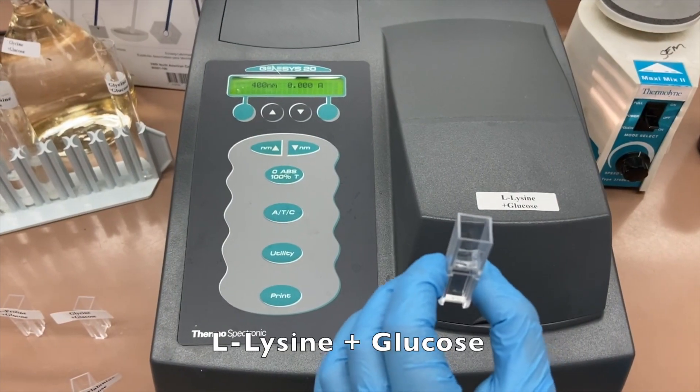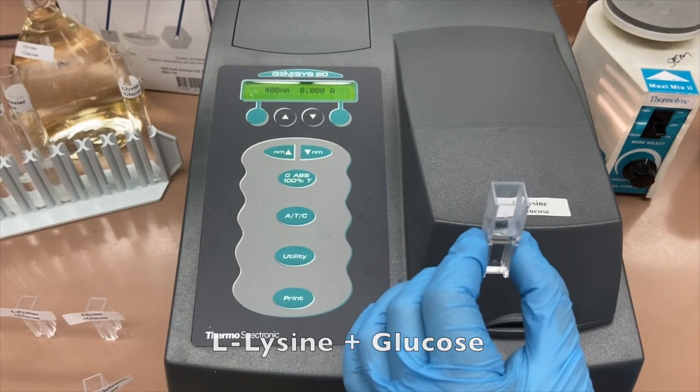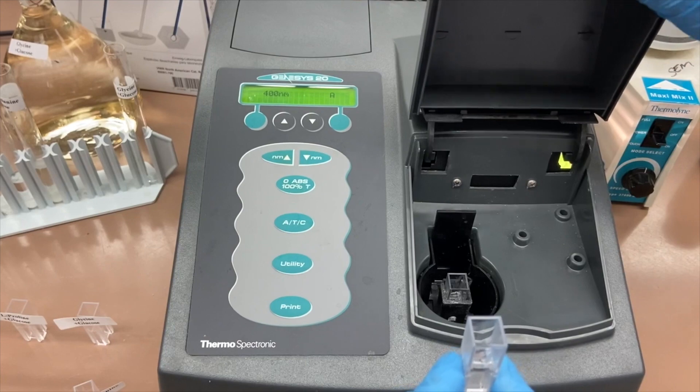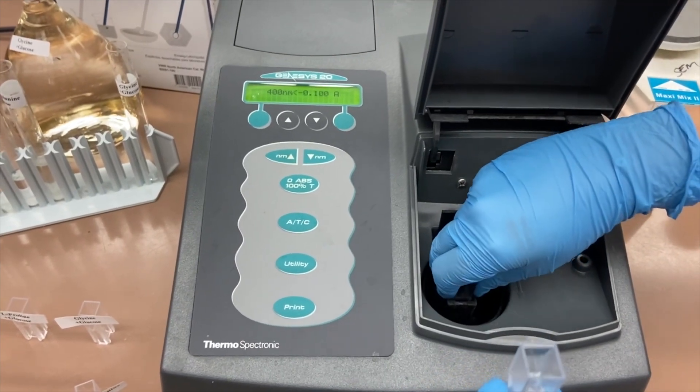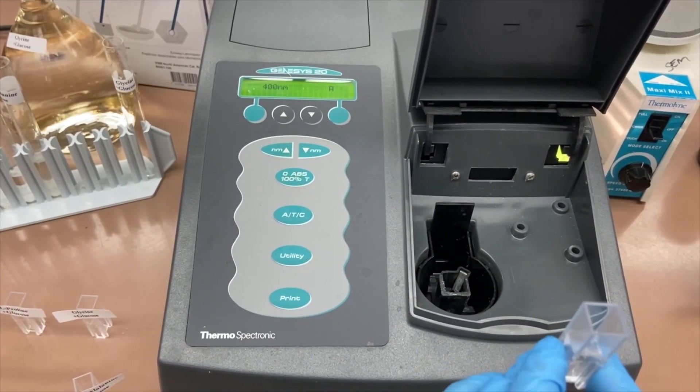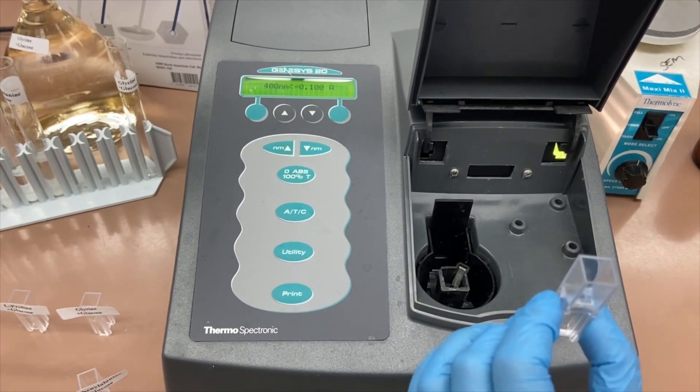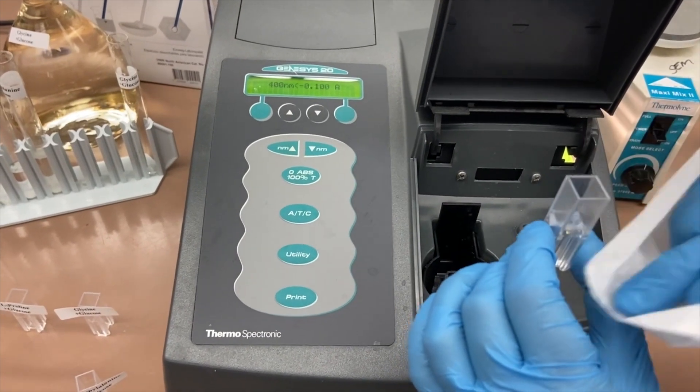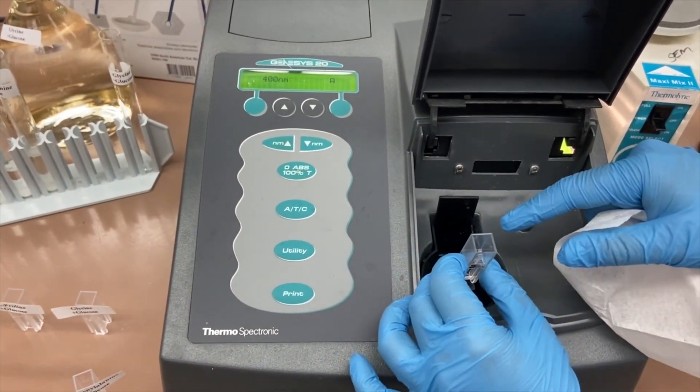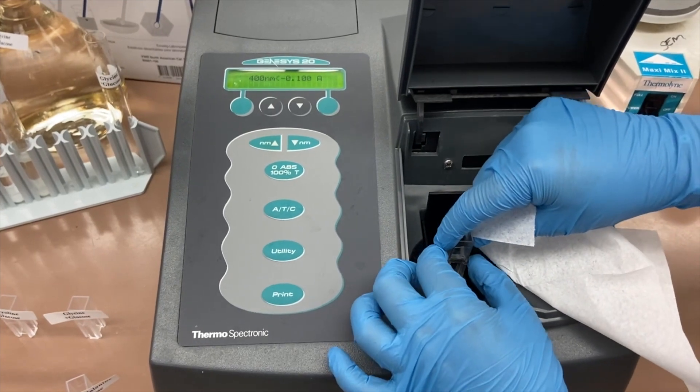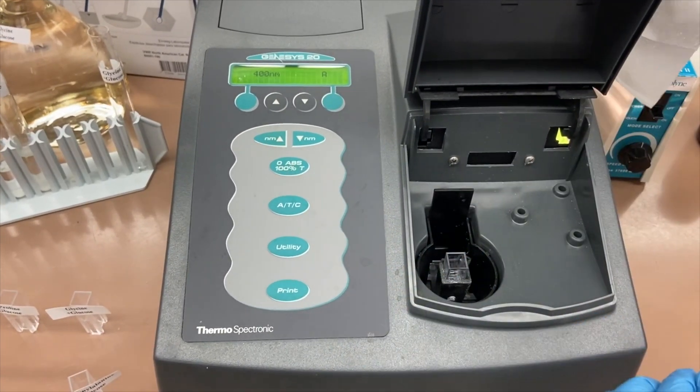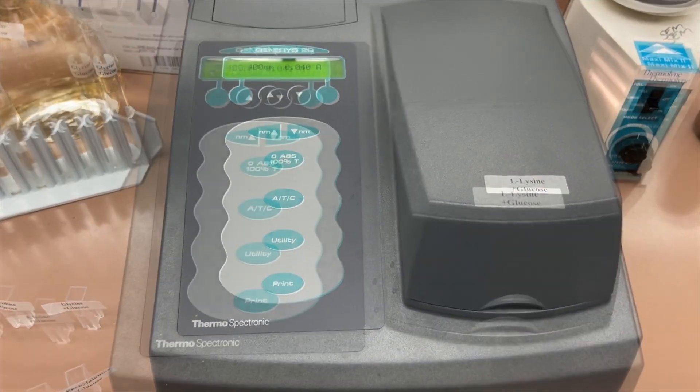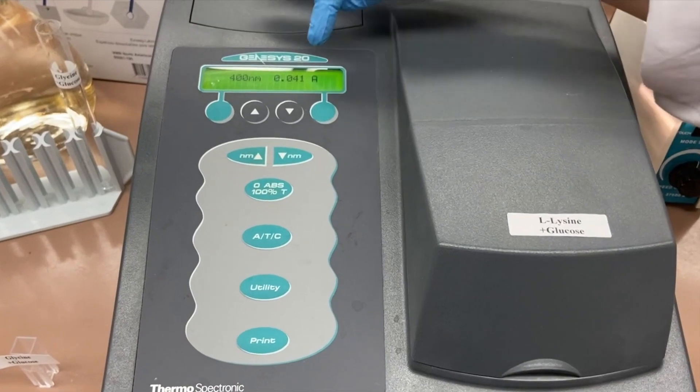Right now I have my lysine sample. Remember that we diluted it with 1000 ml of DI water. First, I will take out my blank and add my cuvette with lysine. Make sure there are no fingerprints and the same side is placed correctly every time. This is the reading for lysine.